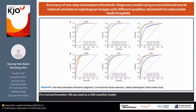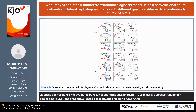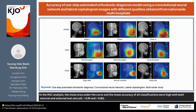Pre-trained DenseNet-169 was used as a CNN classifier model. Diagnostic performance was evaluated by receiver operating characteristic (ROC) analysis, t-distributed stochastic neighbor embedding (t-SNE), and gradient-weighted class activation mapping (Grad-CAM).